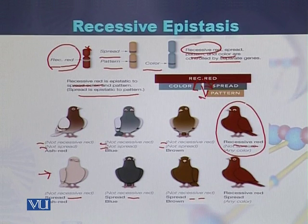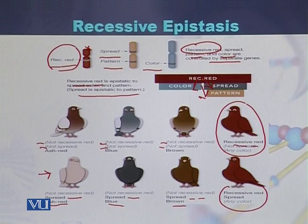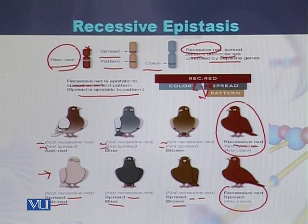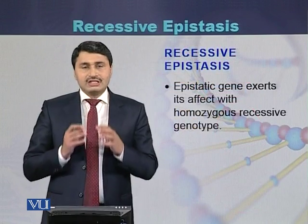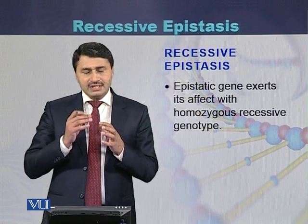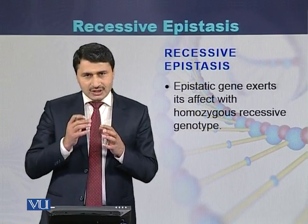If the spread gene is present but there is no recessive red, the colors of the pigeons will be ash red, blue, and brown. But if the recessive red gene is present in homozygous form, it has an effect on any dominant allele of the other genes — the spread gene, pattern gene, and color gene. So recessive red has an epistatic effect on the other genes. Recessive epistasis is thus epistasis in which a gene in recessive form can hide or prevent the expression of other genes.